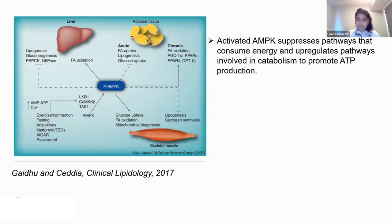In summary, AMPK suppresses pathways that consume energy and upregulates pathways that break down substrates and promote ATP production.